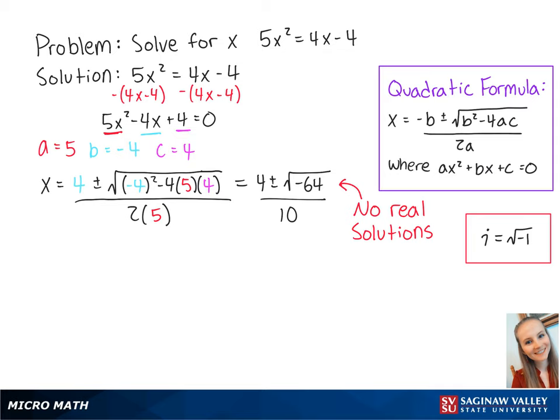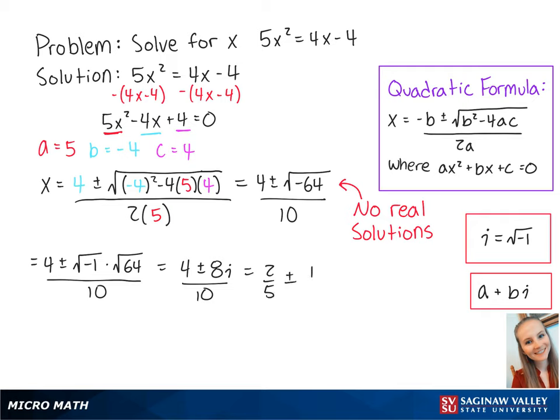However, we can use i to solve for a complex solution. So we can rewrite this as 4 plus or minus the square root of negative 1 times the square root of 64 all over 10. This equals 4 plus or minus 8i over 10. If we rewrite this in the form of a plus bi and reduce the fractions, we get 2 fifths plus or minus 4 fifths i.